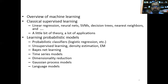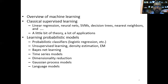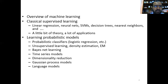Bayes net learning is based on the classical Bayes theorem. Whenever we talk about Bayes theorem, we are talking about conditional probabilities, normally represented as the probability of A given B. There are many problems where the probability of an event depends on the probability of another event that has already occurred, and in those cases we introduce the Bayes net learning approach, which leads to Bayesian networks.